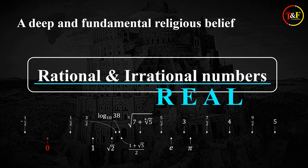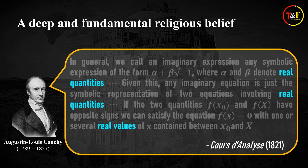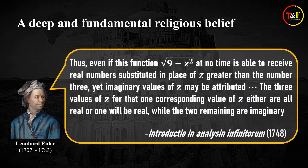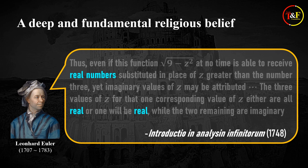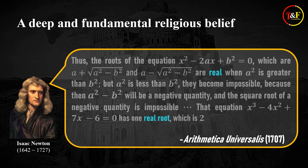I'm going to introduce you to some of their remarks. First, let's look at what French mathematician Cauchy said in the early 19th century. You can notice that in this remark, he referred to rational and irrational numbers as real quantities or real values. If you go back in time a little more, you can also find the word real was being used to refer to rational and irrational numbers in the writings of 17th and 18th century mathematicians Euler, Leibniz, and Newton. Euler referred to rational and irrational numbers as real numbers or real. Leibniz also referred to them as real roots, real one, real quantity. In the case of Newton, he says real, real root.